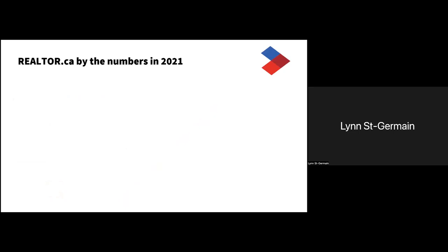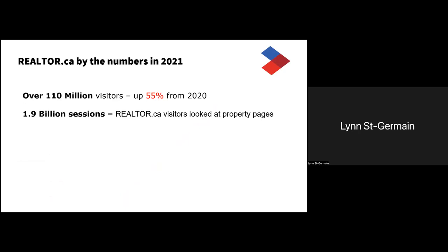In order to understand why realtor.ca is still the number one site for real estate in Canada, we have to look at numbers. Let's take a look at what kind of activity we've had in 2021. We had over 110 million visitors in the past year, which was pretty incredible, because we thought 2020 had beaten many of the records already, but it turns out we still weren't done. We also had over 1.9 billion sessions.